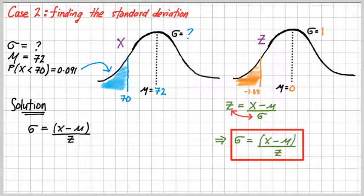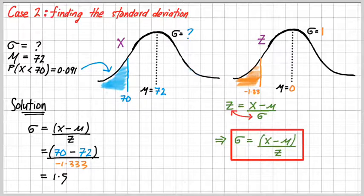So for the solution, there's a formula there that we've just found. Numerator, 70 minus 72, x is 70. We're going to take away the mean of 72. And we're going to divide by our z value, which we've just found. Remember to keep the negative in there. And if we've entered that correctly on our calculator, we should get a standard deviation of 1.5. Great. That's it. We will see you next time.